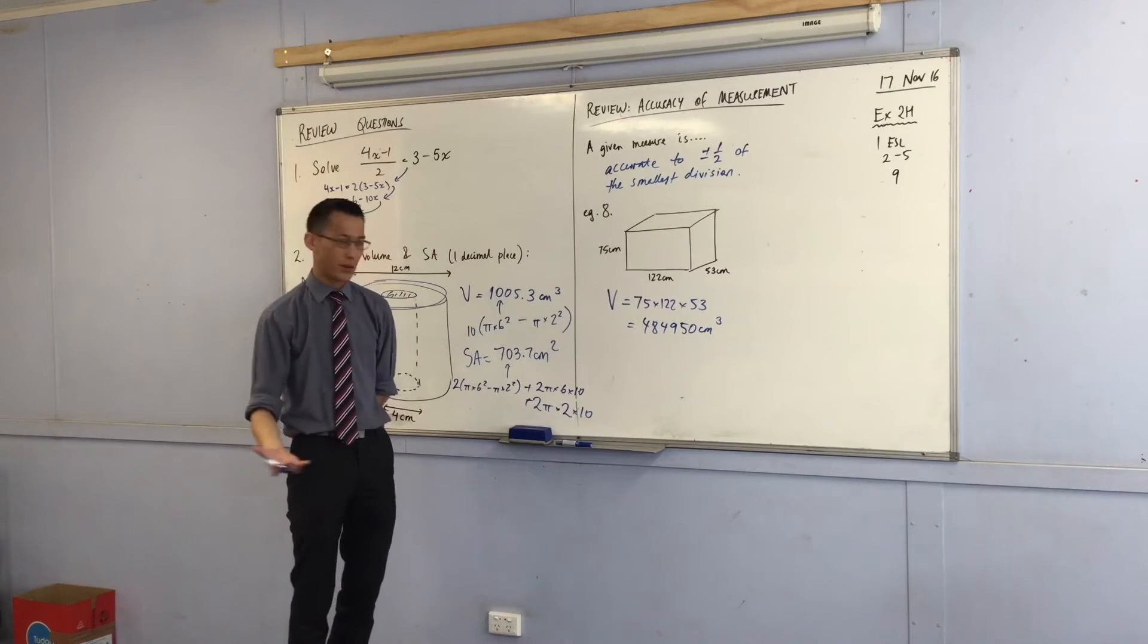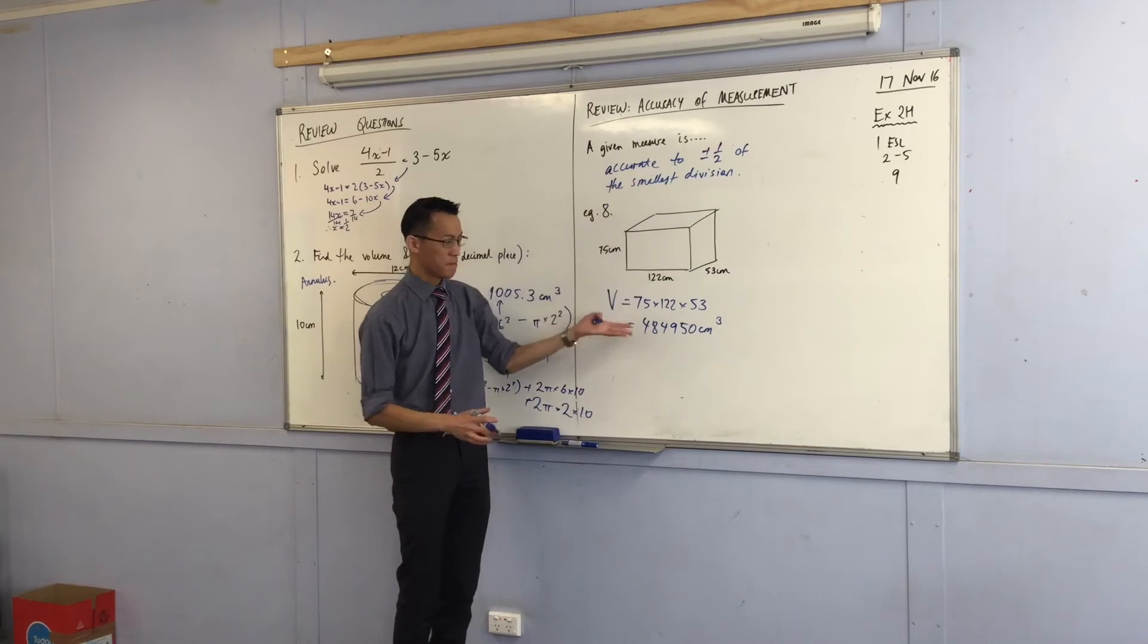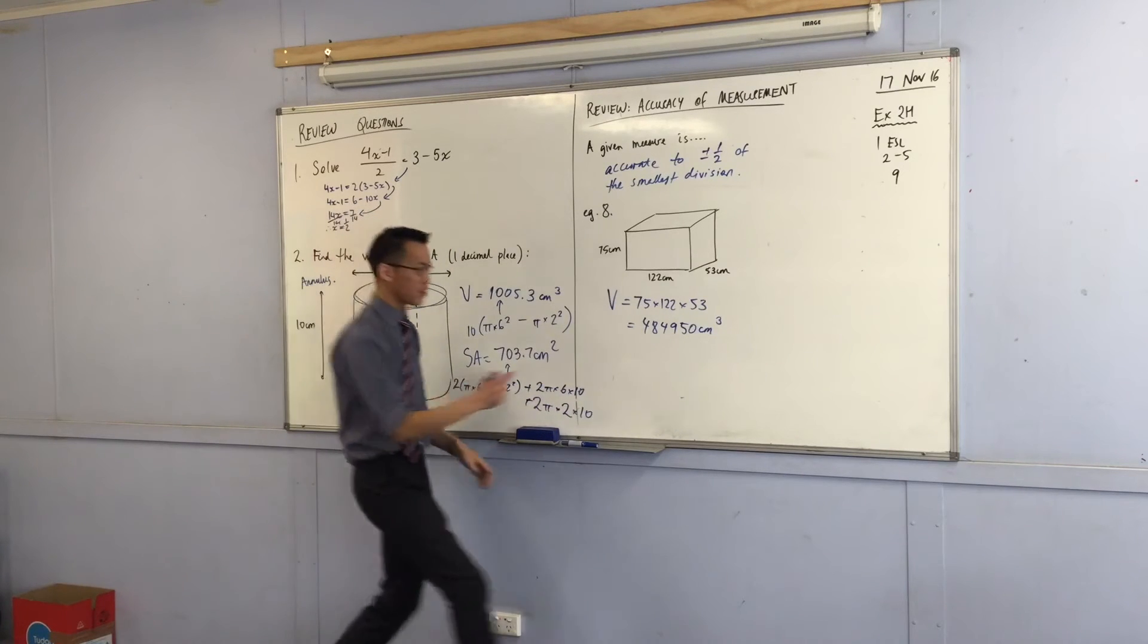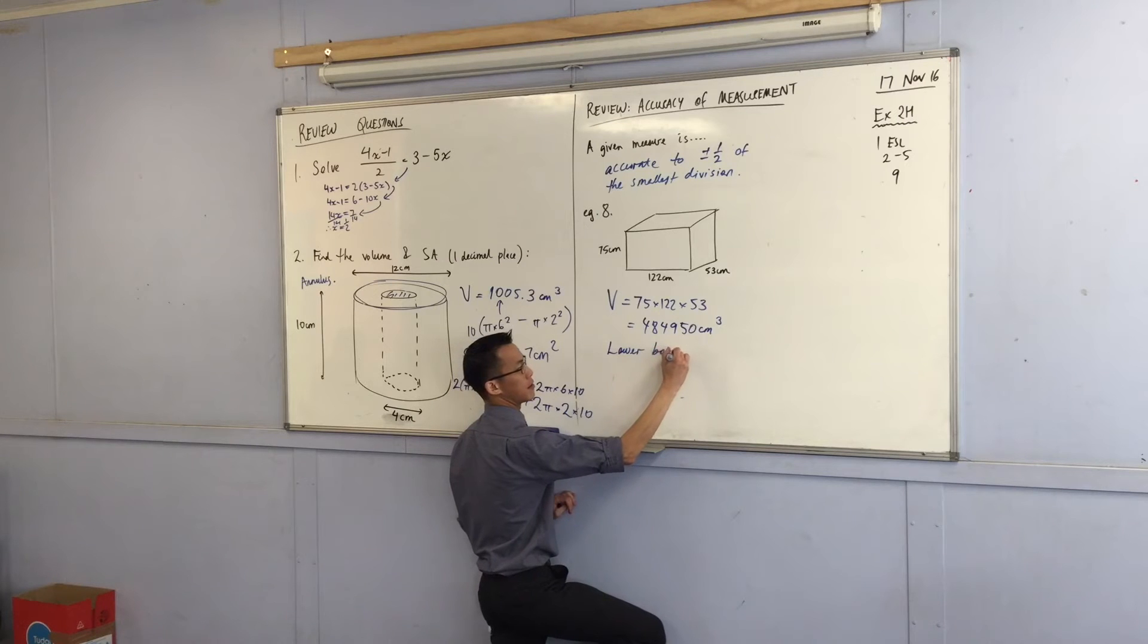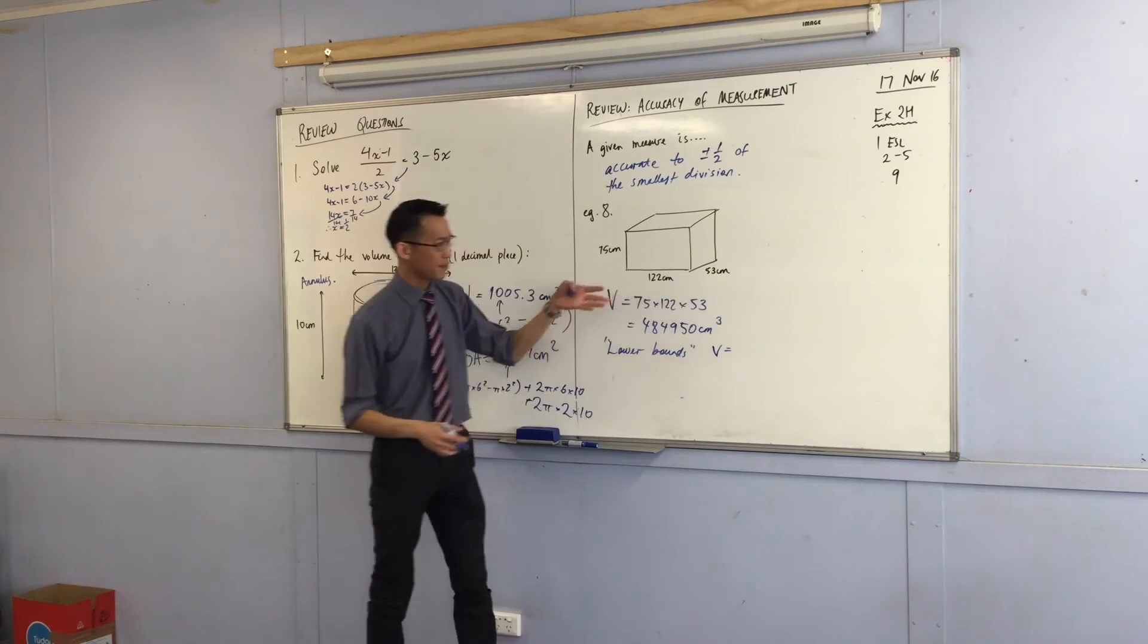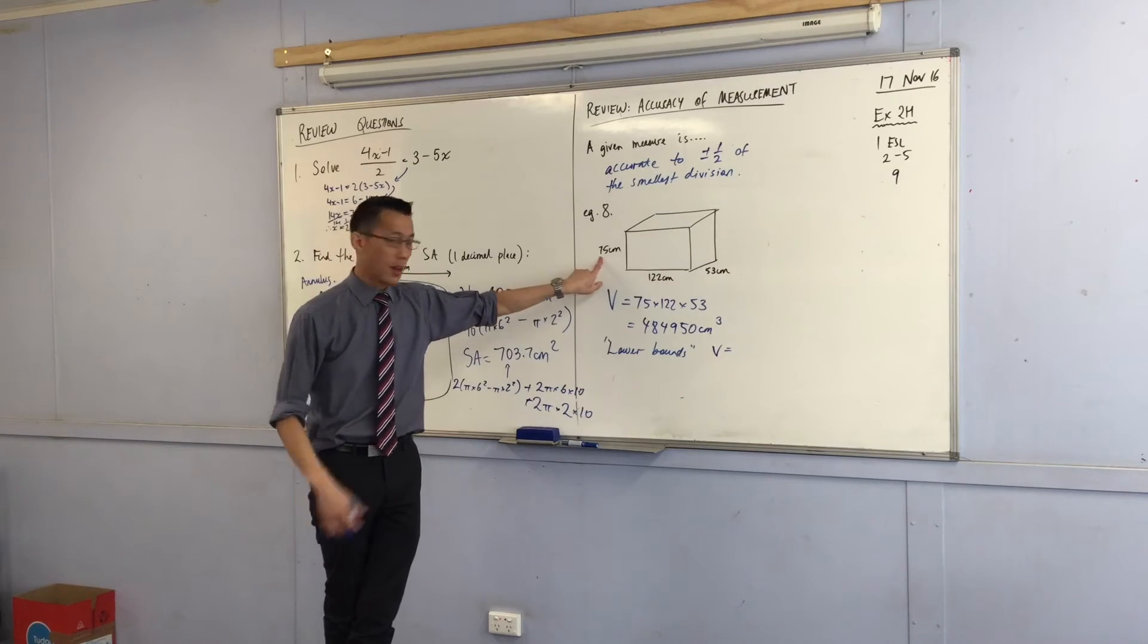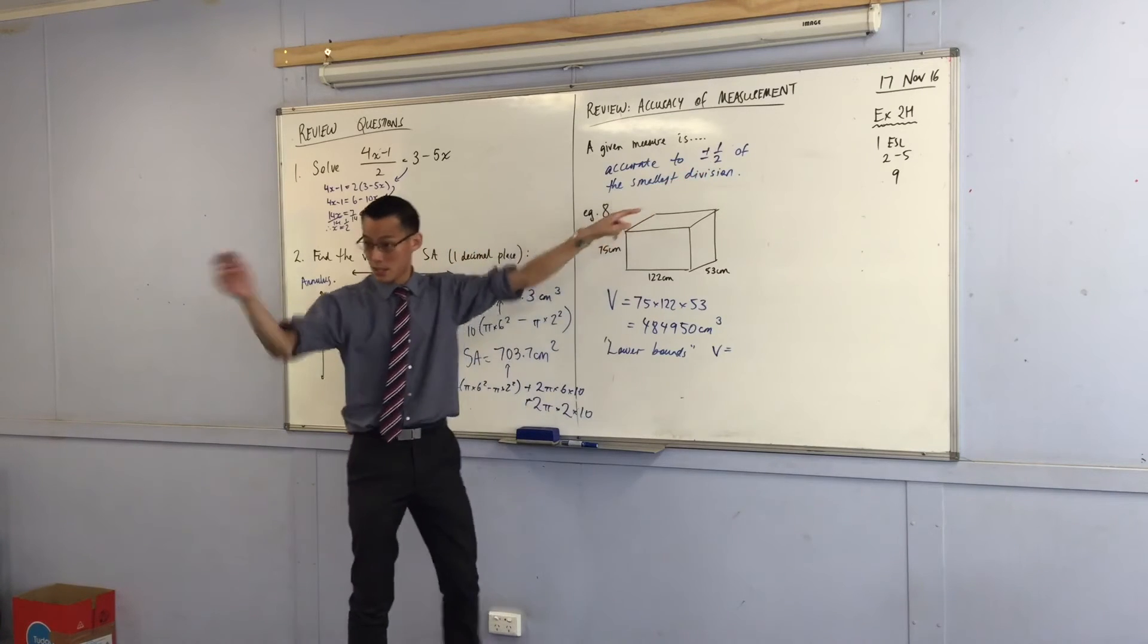Now, we know that because it's not necessarily perfectly accurate, the real volume might be smaller or it might be bigger. So what we're going to do is we're going to take the lower bounds and we're going to work out the volume based on if these were actually not the exact, but what if they were smaller than that. So this one over here, 75, the smallest it could possibly be if it's half a unit is going to be 74.5.